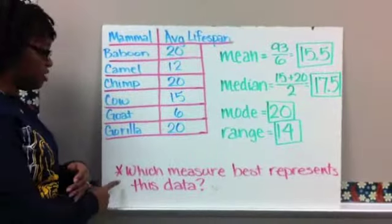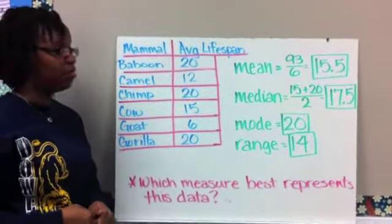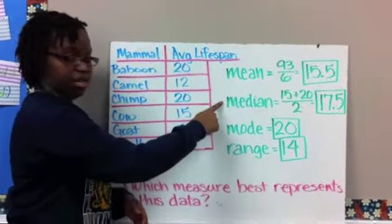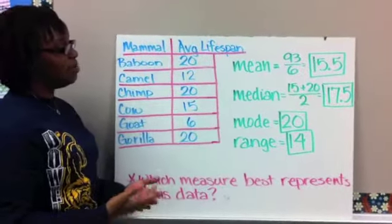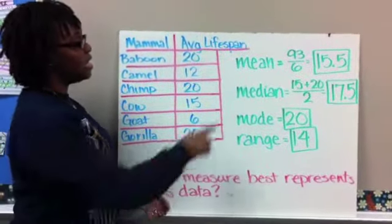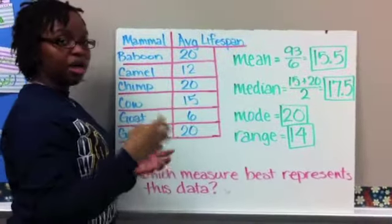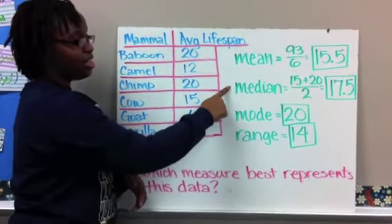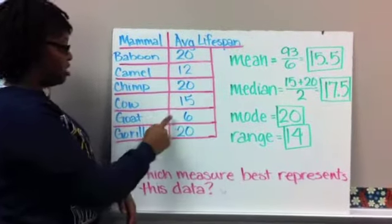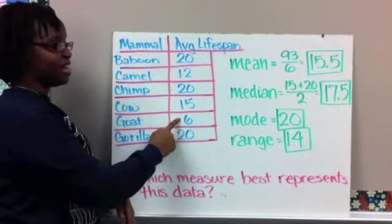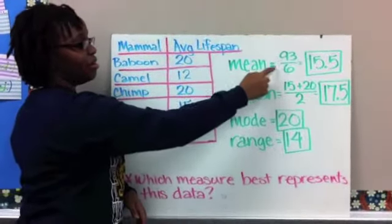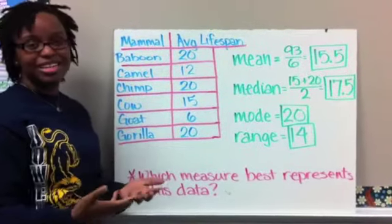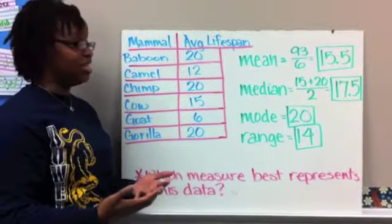You are also supposed to answer the question, which measure best represents this data? Well, usually, you're going to choose between your mean or your median, okay? Here, either one of these could be a good option. Your mean is the true average considering all of our values, but if we notice, our median is a whole two years higher, okay? So this one goat with a lifespan of 6 brought down that middle number or that mean down by two whole years, okay? So, when we're presenting this, do we want people to think that, okay, our animals live about 17 and a half years?